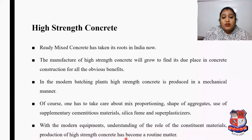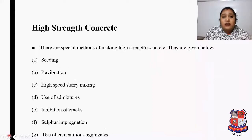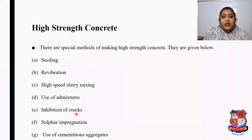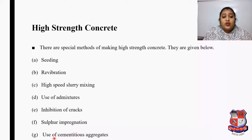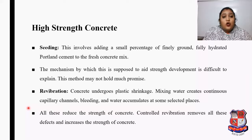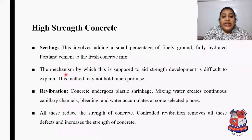There are special methods of making high strength concrete: seeding, revibration, high speed slurry mixing, use of admixture, inhibition of cracks, sulphur impregnation, and use of cementitious aggregate. Seeding involves adding a small percentage of finely ground fully hydrated Portland cement to the fresh concrete mix. The mechanism by which this is supposed to aid strength development is difficult to explain, and this method may not hold much promise.